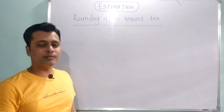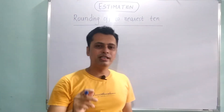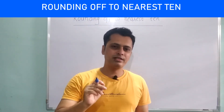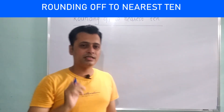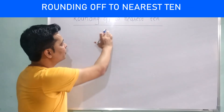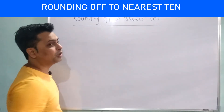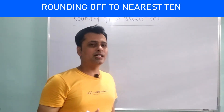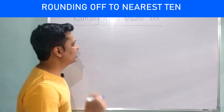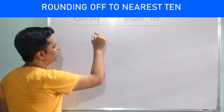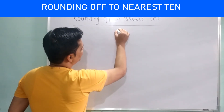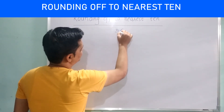In estimation, you will first learn rounding off to the nearest 10. If you want to round off, how can you do it? Let's see — nearest 10 means what will it be. Like, one number I have given here is 36.